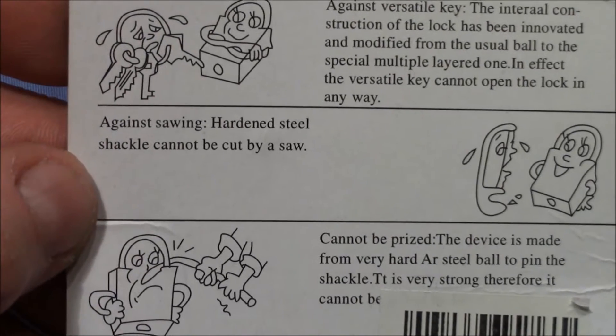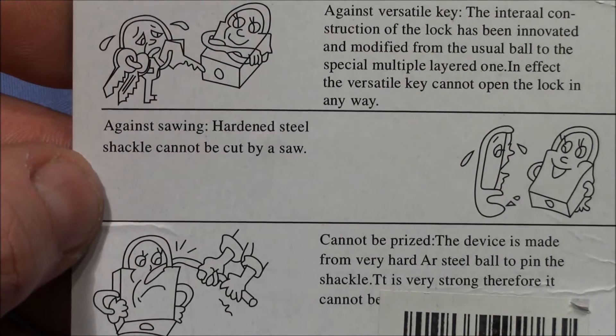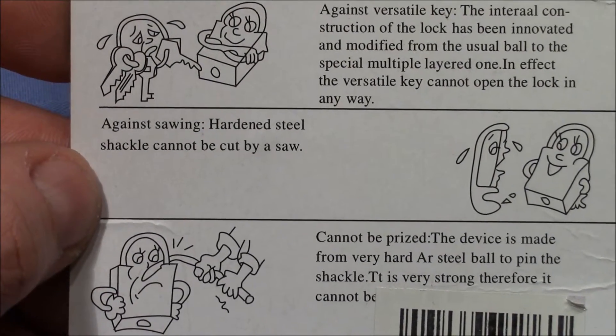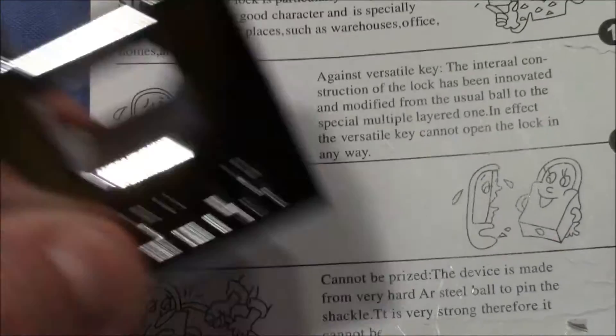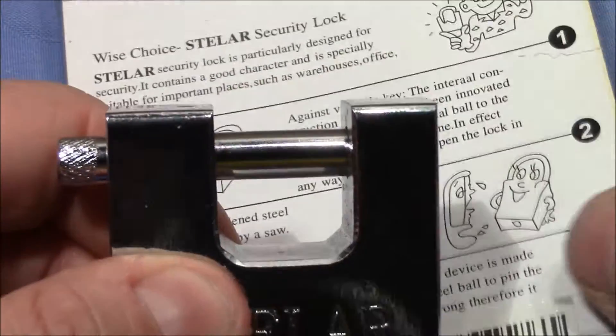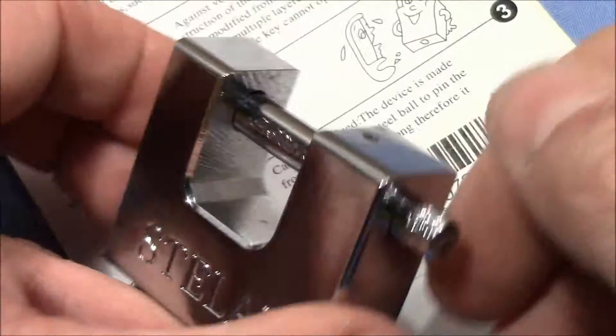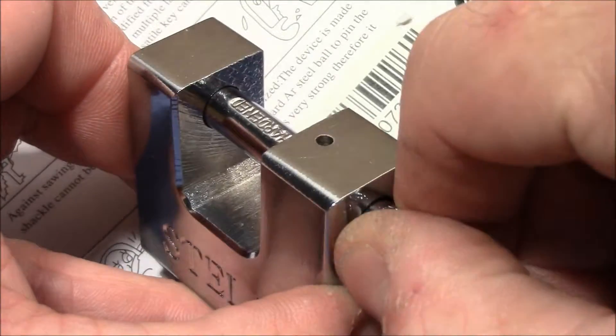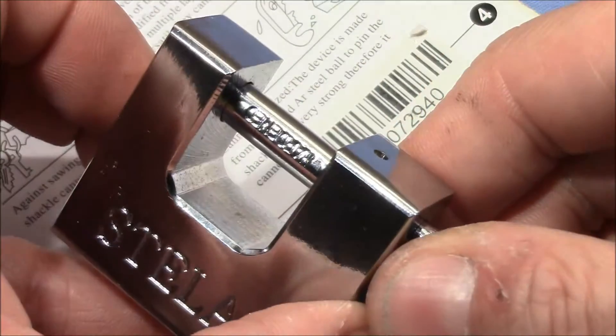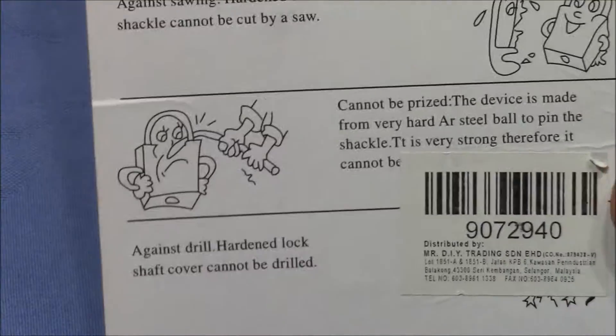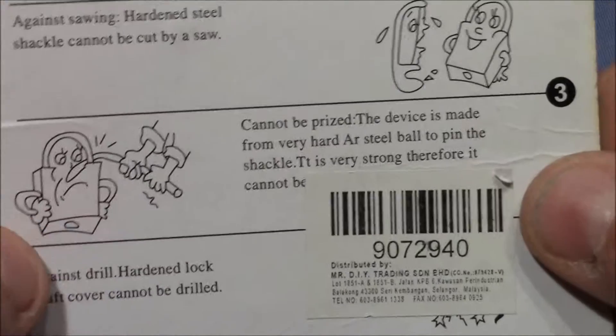Next: Against sawing. Hardened steel shackle cannot be cut by a saw. We will test the shackle if it's really hardened, but it spins freely, so that means if you want to cut it with a saw you would need to grab it to hold it while you cut it.